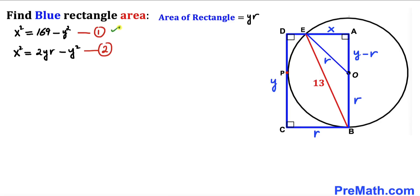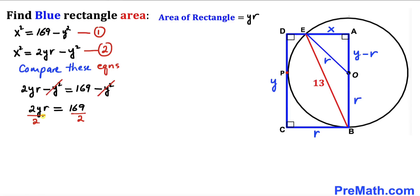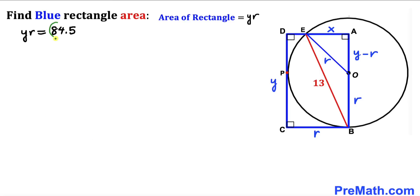Comparing Equations 1 and 2, the left-hand sides are the same, so we equate the right-hand sides: 2yr minus y squared equals 169 minus y squared. The negative y squared terms cancel, giving 2yr equals 169. Dividing both sides by 2, we find y times r equals 84.5 square units.